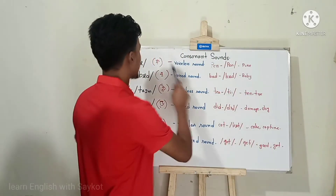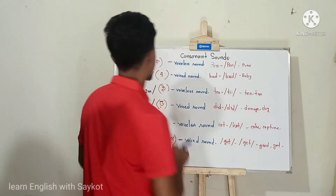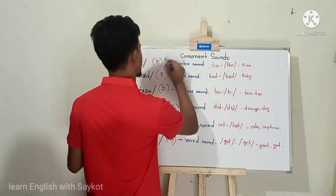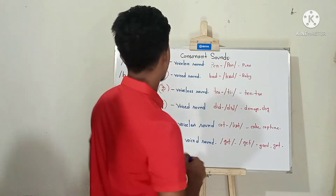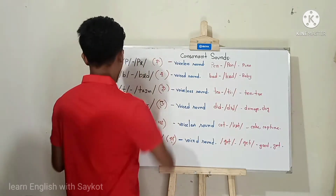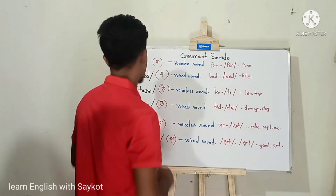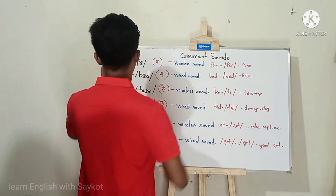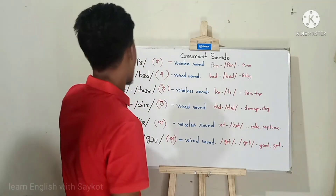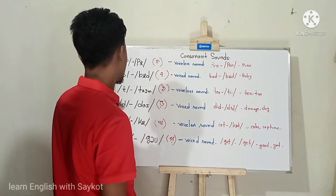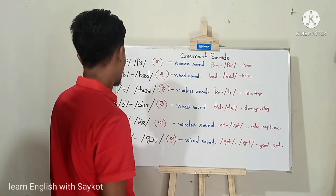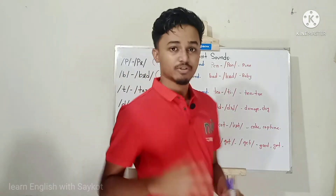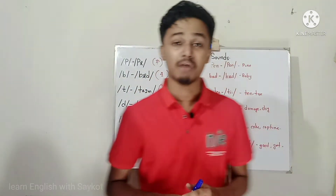Today, first of all, I want to say that I will discuss consonant sounds. Mainly, consonant sound has 24 consonant sounds, but today I would like to discuss six consonant sounds. This is very important. Our first consonant sounds are: pa, ba, ta, da, ka, ga — six consonant sounds.